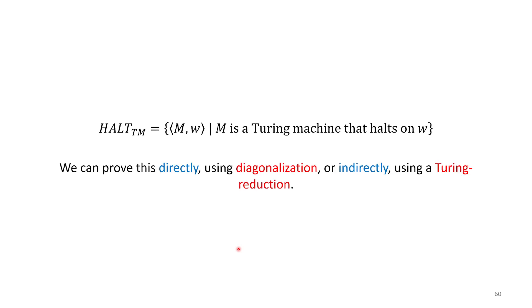One way we could prove this is to follow what we've already done and what Turing did — use diagonalization, which would be a direct proof, and it wouldn't be too far a step from what we've already done. But we can also indirectly show that it is undecidable using what we know as a Turing reduction.